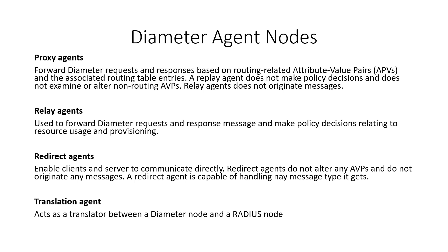In a relay agent node, diameter requests and responses are forwarded based on routing-related attribute-value pairs rather than a routing table. A relay agent does not make policy decisions and does not examine or alter non-routing attribute-value pairs, nor does it originate messages. Redirect agents enable clients and services to communicate directly; they do not alter attribute-value pairs or originate messages, and a redirect agent is capable of handling any message type. Lastly, a translation agent acts as a translator between a diameter node and a Radius node.